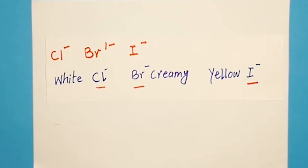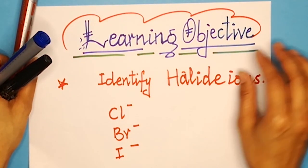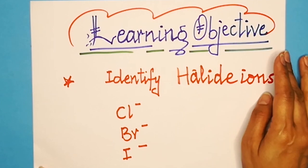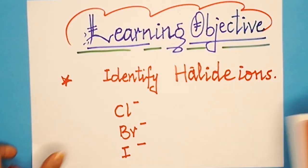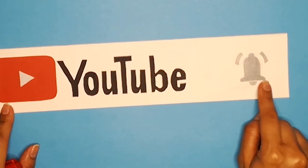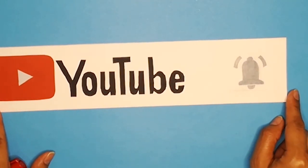I hope you have learned the identification of halide ions very well. Look at all the observations and record them in your mind. We have completed our objective of the day — the identification of halide ions. If you liked this video and learned even a single thing, don't forget to subscribe to my channel and hit the bell icon. Stay blessed, stay tuned — signing off, Ms. Aisha Mansoor.